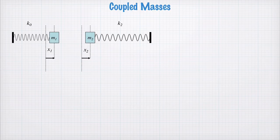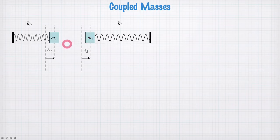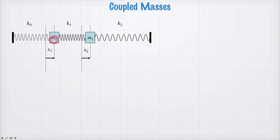Let's now consider what happens if we have oscillators that are coupled together so they can exchange energy. We'll imagine two mass-spring oscillators: one with spring constant k0 and mass m1, and another with spring k2 and mass m2. At the moment they oscillate independently, and we know how to solve those equations. But now we add a spring in the middle which couples the two oscillators together so energy can be exchanged.